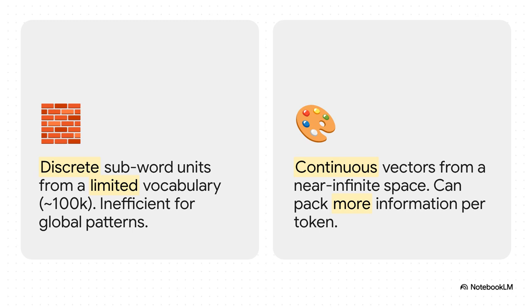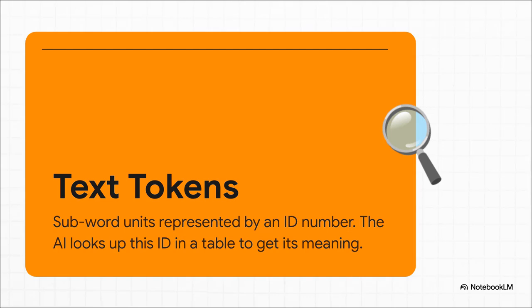Let's break that down a little bit more. So a text token, imagine the word explainer. The AI might break that down into two pieces, explain and er. Each of those pieces gets assigned a number, like 5821 and 43. The AI then looks up those numbers in this giant pre-made dictionary of about 100,000 entries to figure out what they mean. It works, but it's a very rigid, one-thing-at-a-time kind of process.